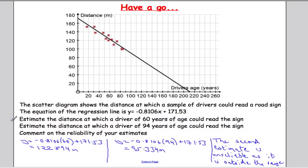Here are the solutions. So we got the distance when a driver is 60 here. The distance when a driver is 94 and then commenting on the reliability of the estimates. The second estimate is not reliable because it's outside the range of data. We can see here we only collected data for this group here. There is a possibility that when you get into your 90s that your eyesight dramatically deteriorates.